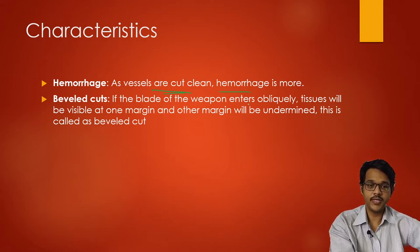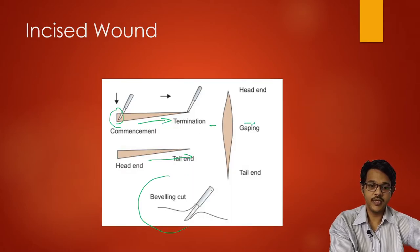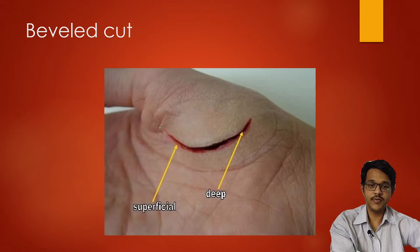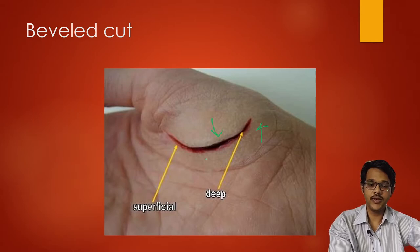Bevel cuts: if the blade of the weapon enters obliquely, tissues will be visible at one margin and the other margin will be undermined. In this image you can see, if the weapon enters the tissue obliquely, there is a flap of skin visible with undermined margins. There will be a skin flap above the wound and one more wound below the skin — that is called a bevel cut.